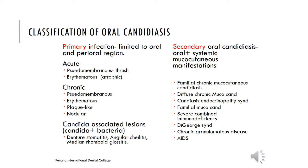Classification of oral candidiasis: it is either a primary lesion or a secondary lesion. The primary one is limited to the oral and perioral regions, while the secondary one is associated with systemic manifestations. Primary forms include acute oral candidiasis — pseudomembranous or erythematous (atrophic) — and chronic forms: pseudomembranous, erythematous, plaque-like, or nodular. Candida-associated lesions include denture stomatitis, angular cheilitis, and median rhomboid glossitis. Secondary candidiasis is associated with endocrinopathy, mucocutaneous candidiasis, or HIV.